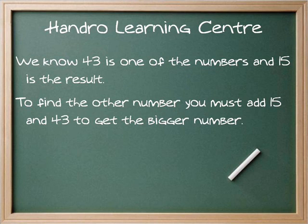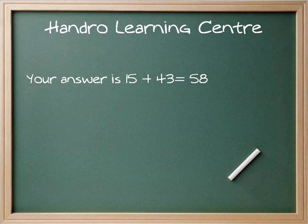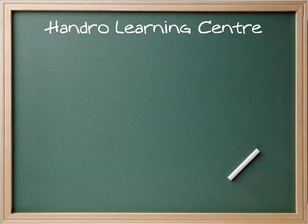To find the other number, you must add 15 and 43 to get the bigger number. So, by adding 15 and 43, your answer is 58. I hope you understood this explanation and you enjoyed watching our video. Thank you from HandrowLearning.com.